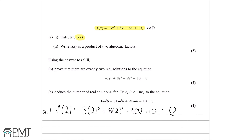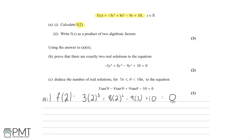That's it for the first part of A. Now let's move to the next question. We need to write f of x as a product of two algebraic factors. So if x equals 2 gives f of 2 equal to 0, then that means x minus 2 is a factor by the factor theorem.